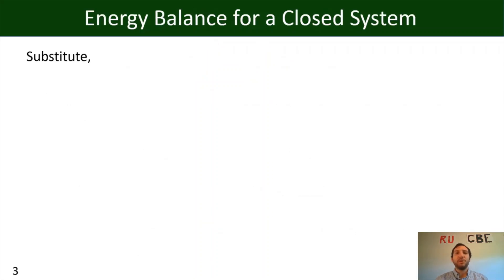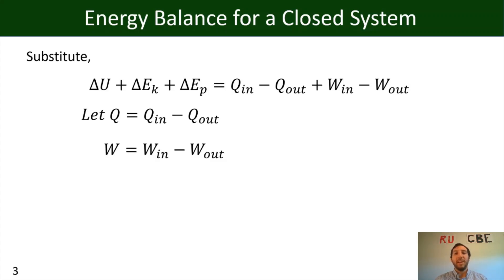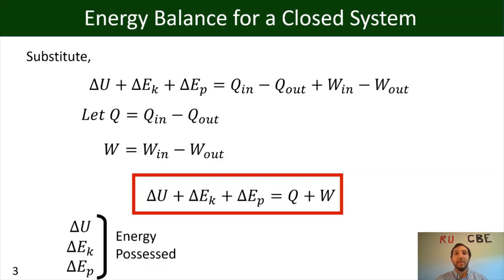Substituting all these pieces into our energy balance equation, we get: ΔU plus ΔEK plus ΔEP equals Q_in minus Q_out plus W_in minus W_out. We simplify by letting Q equal Q_in minus Q_out and W equal W_in minus W_out. We finally get our energy balance for a closed system: ΔU plus ΔEK plus ΔEP equals Q plus W. The delta terms represent energy possessed within the system, and Q and W are forms of energy in transit.